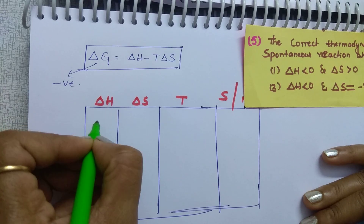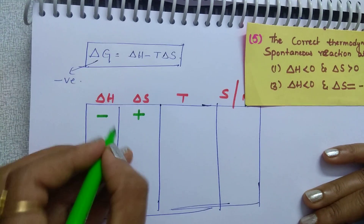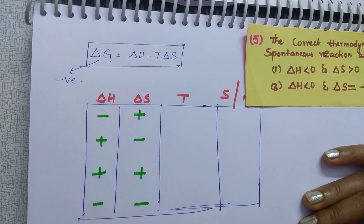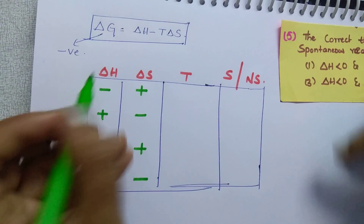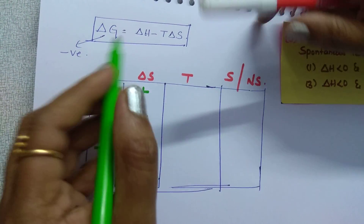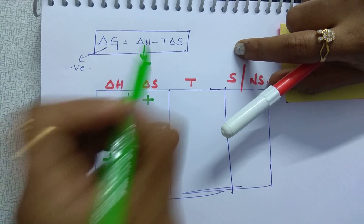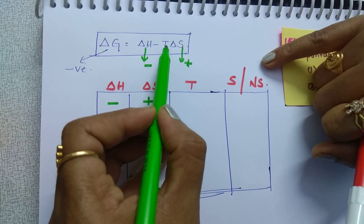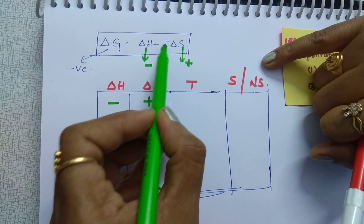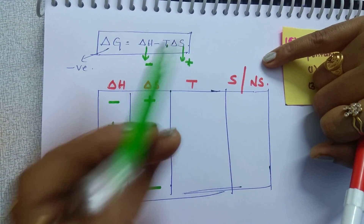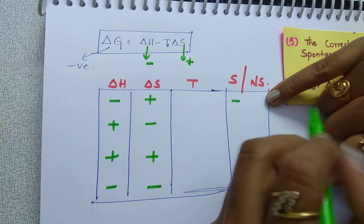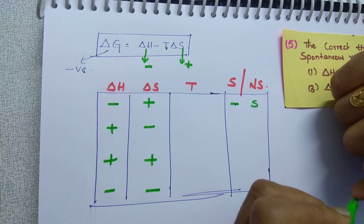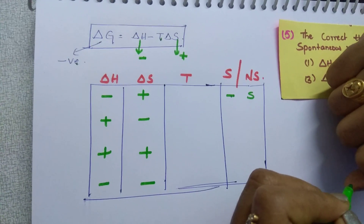Take columns for delta H, delta S, temperature, and whether the reaction is spontaneous. Case 1: delta H is negative and delta S is positive. Then the T·delta S term is negative of a positive, giving a negative value. Negative minus a negative gives a negative delta G at any temperature, so the reaction is spontaneous at all temperatures.